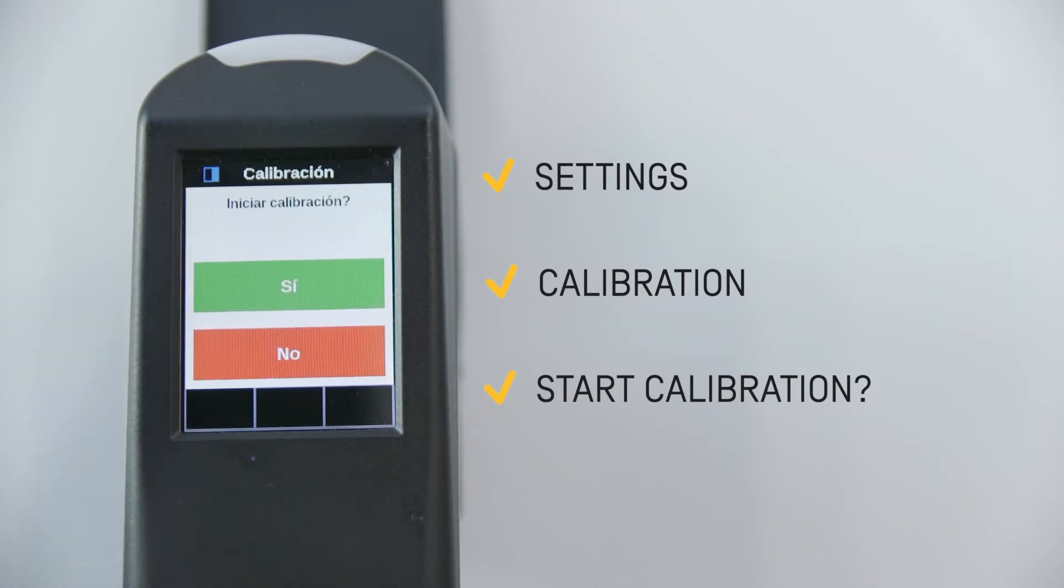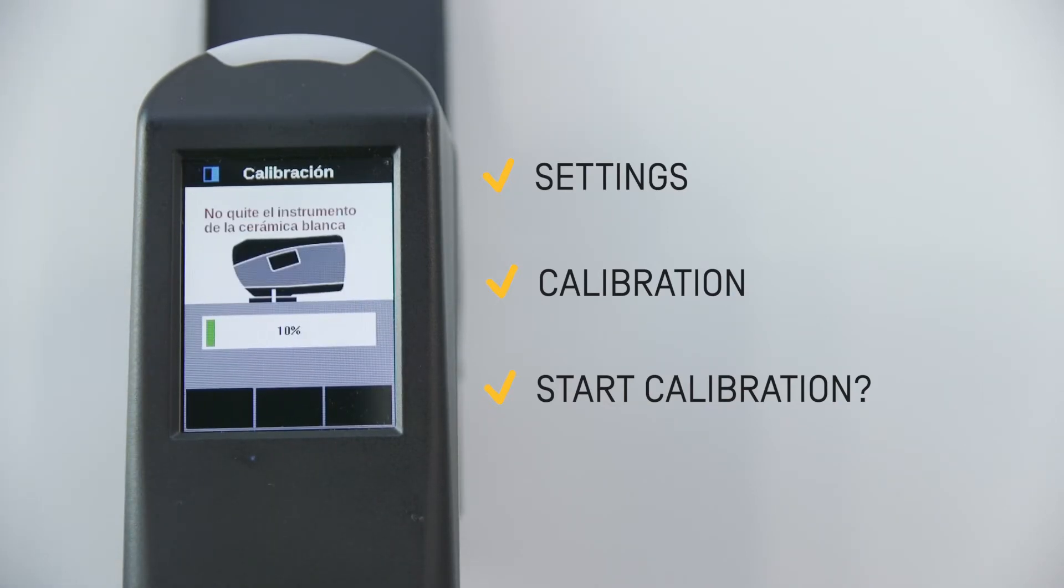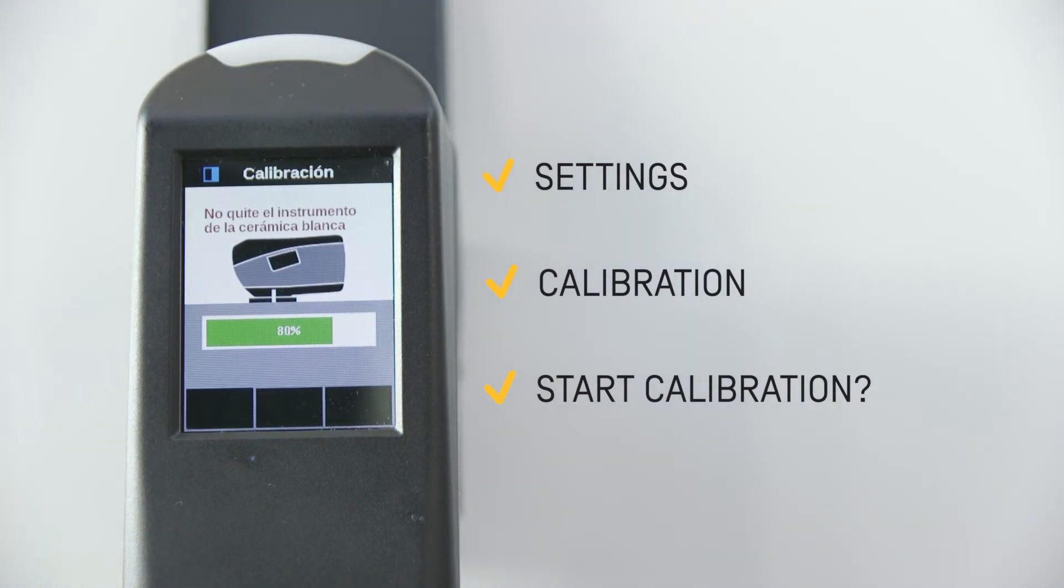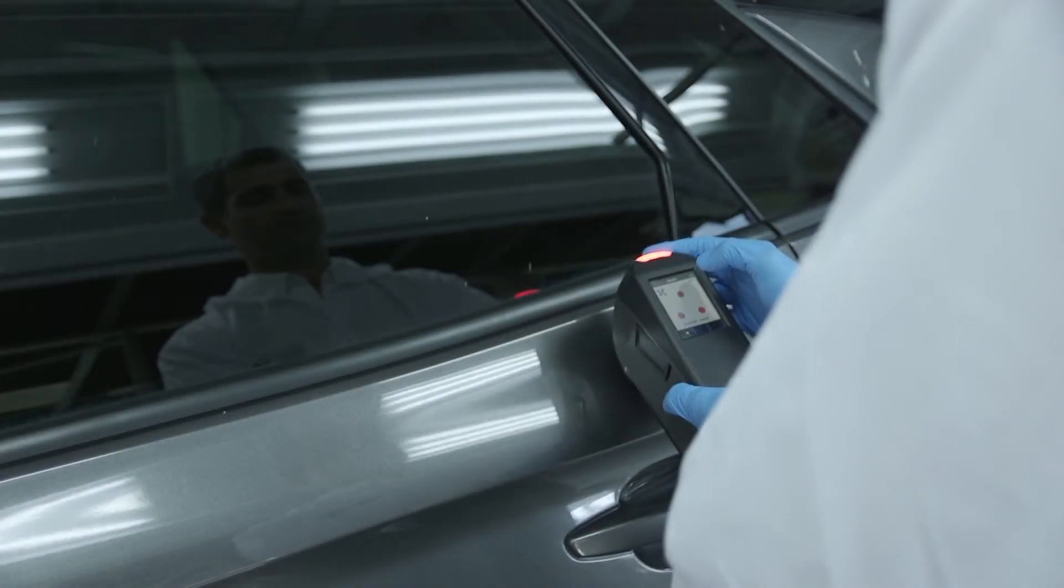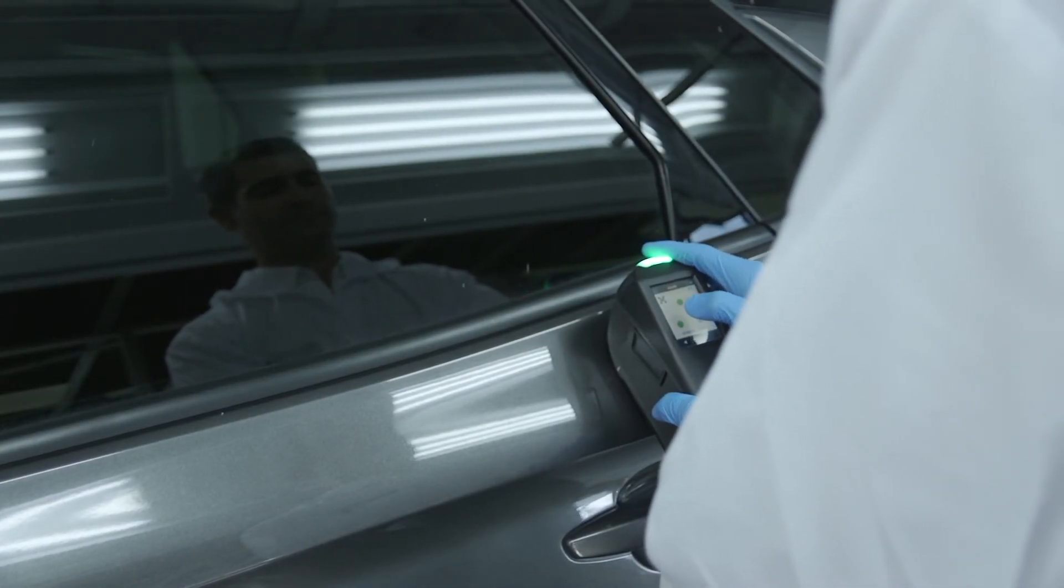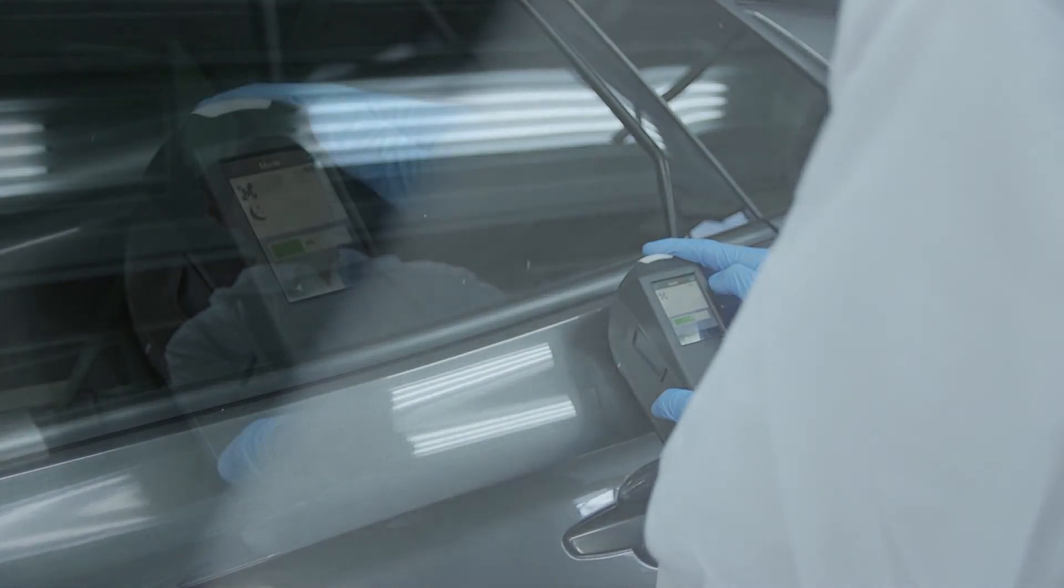Do not remove the spectrometer from the white ceramic plate until the calibration process has been completed. Finally, a notification will appear on the screen confirming that the calibration has been completed. The spectrophotometer will then be prepared to perform measurements on the vehicle's surface.